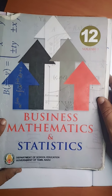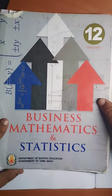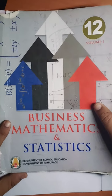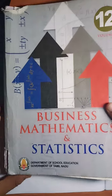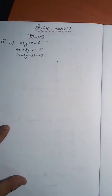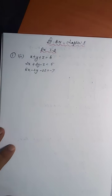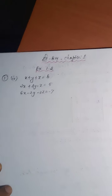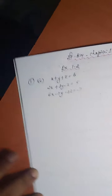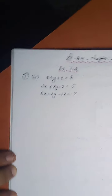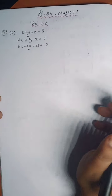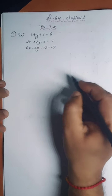Hi children, this is Shivakumar — 12th Standard Business Mathematics and Statistics. Continuation of exercise 1.2; we already completed problem number 1, sub-questions 1, 2, and 3. This is sub-question number 4.